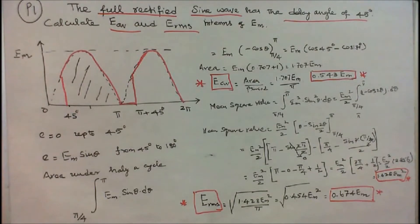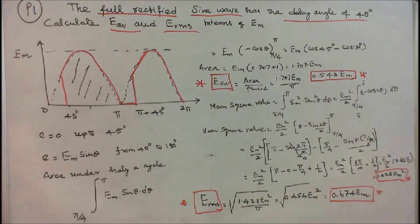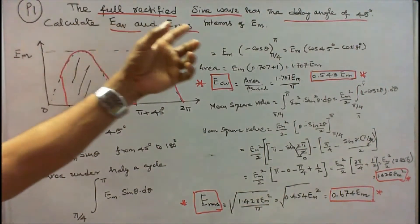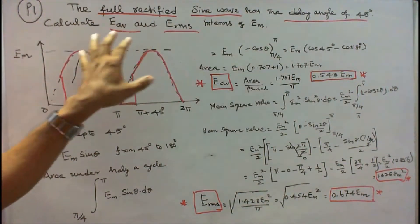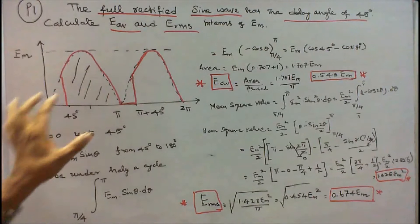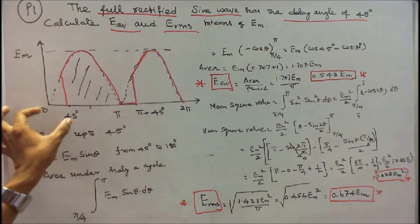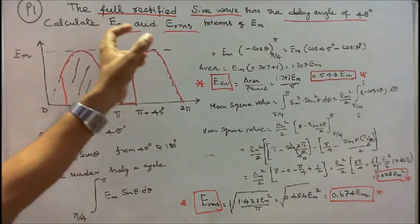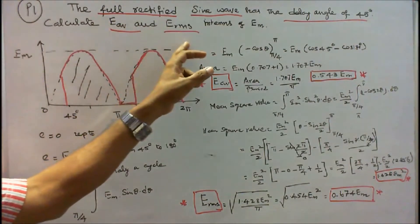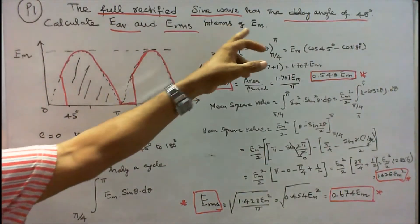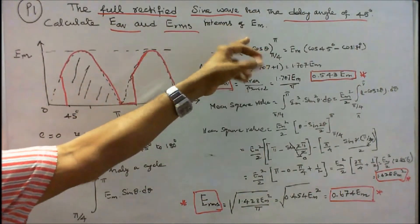In this class, we calculate the average value and RMS value of various waveforms. Problem number 1: a full rectified sine wave has a delay angle of 45 degrees. Calculate the average and RMS value in terms of EM.